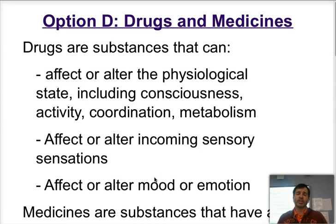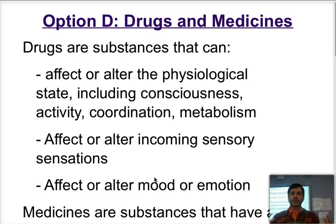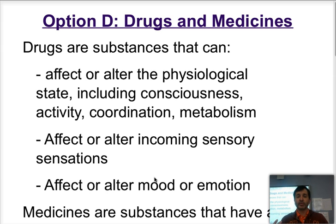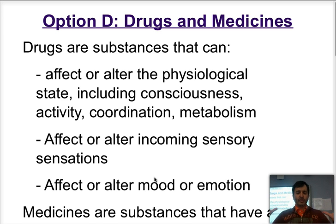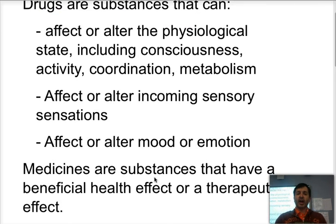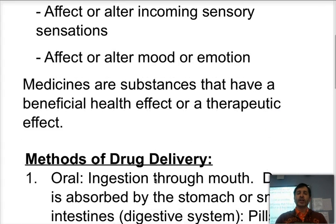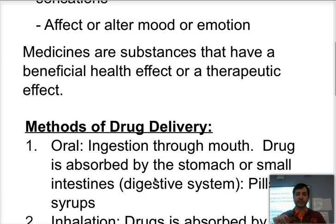Welcome to IB Chemistry. We're going to be talking about Option D, Drugs and Medicines, and this is Video 1. There's a small distinction between them. Drugs are any substance that is able to alter the physiological state of the body, can affect sensory perception or information coming into the body, or affect your mood or emotions — so they have a very broad, general effect. Medicines are a particular subset of drugs which tend to have a beneficial health effect, or what we call a therapeutic effect.